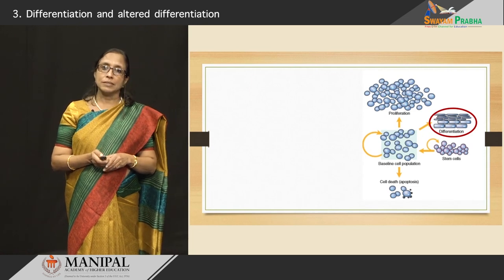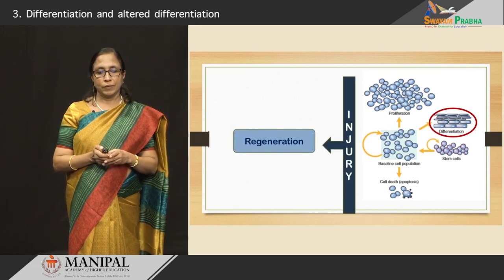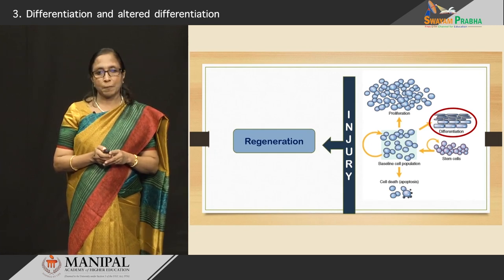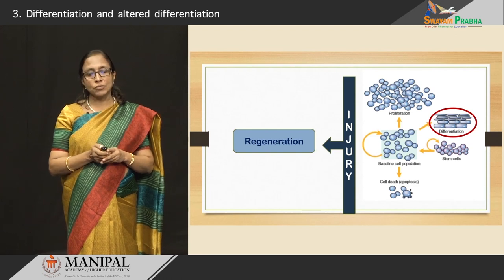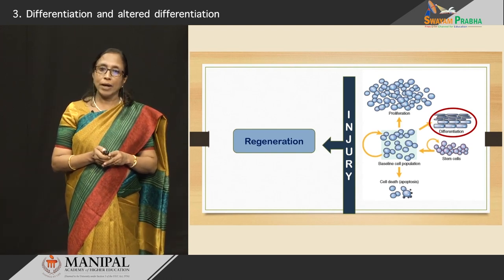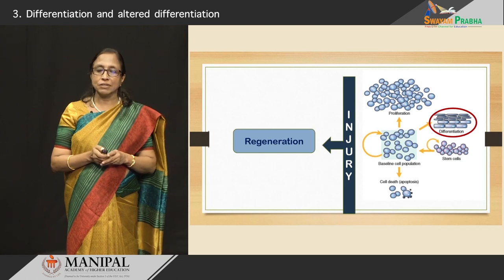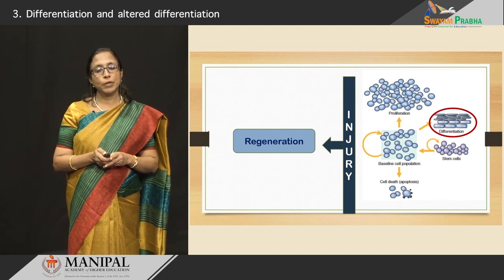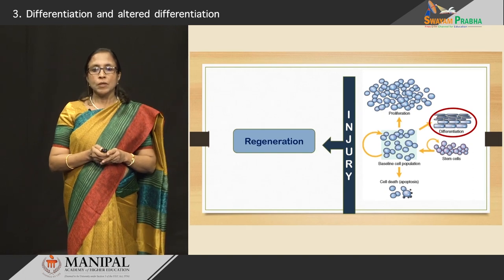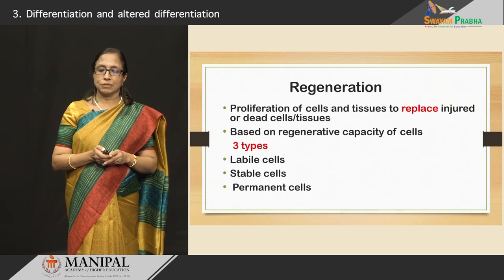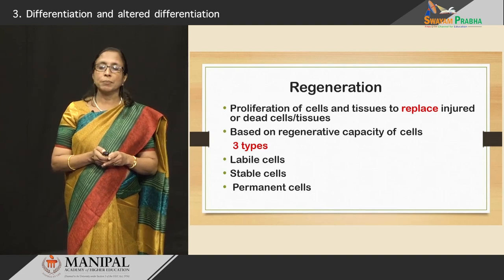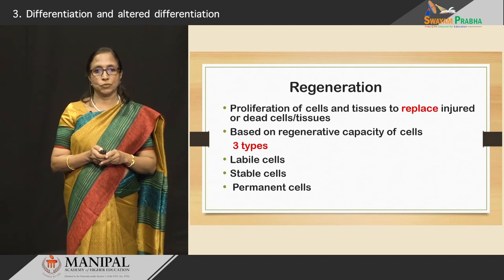Now, when we look at cell injury, when cells are injured, a lot of cells are being lost. When these cells are lost, there are mechanisms by the body whereby the cells regenerate or they are replaced. The cells which are lost need to be replaced, and that process is what we call regeneration. What is regeneration? It is actually the proliferation of cells and tissues to replace injured or dead cells and tissues.